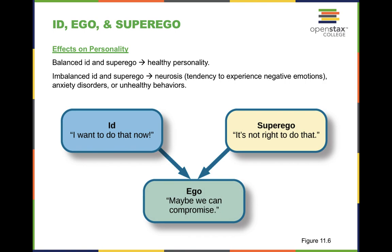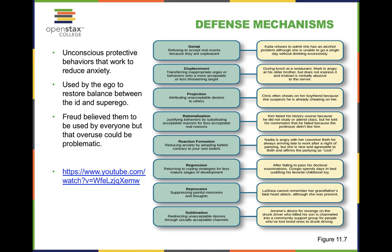Defense mechanisms are unconscious protective behaviors that work to reduce anxiety. They are ego protectors, so we don't necessarily realize that we're engaging in them until we're made aware of it. Firstly, we have denial — this is whenever we refuse to accept reality because it makes us uncomfortable or because it's unpleasant. For example, Kayla refuses to admit that she has an alcohol problem, although she is unable to go a single day without drinking excessively.